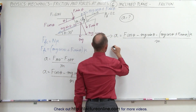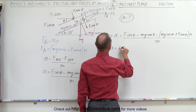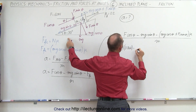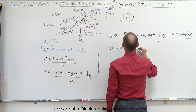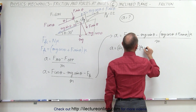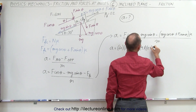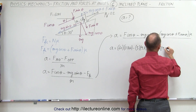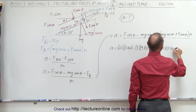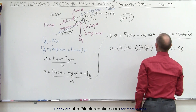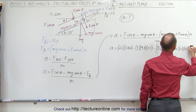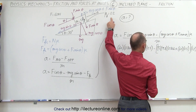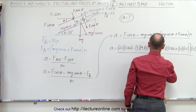Let's plug in all the numbers. Acceleration equals f = 60 newtons times cosine 30° (0.866), minus mg sine theta where m = 5, g = 9.8, and sine 30° = 0.5, minus the quantity (mg cosine theta: 5 × 9.8 × 0.866, plus 60 × sine 30° = 0.5) times mu = 0.2 — that's the coefficient of friction — all divided by the mass, which is 5.